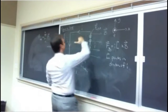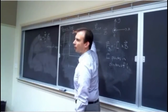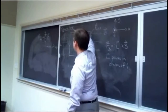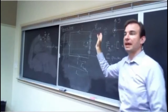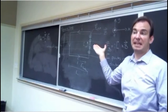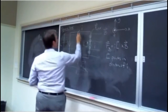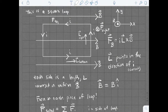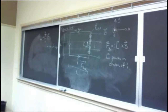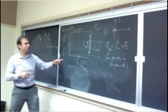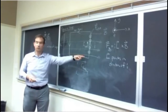For the top of the loop, current flows to the left. But notice that the magnetic field and L vector are anti-parallel in this case — they lie on the same line — so the cross product is zero and there is no force on the top side. Similarly for the bottom, L vector points to the right and B also points to the right, so the force is zero there as well.